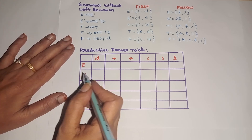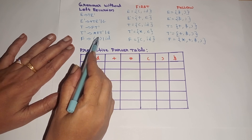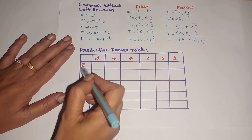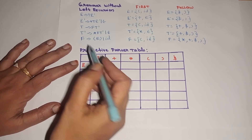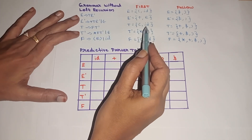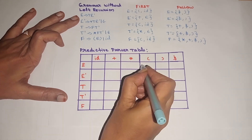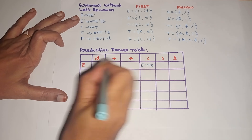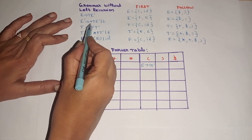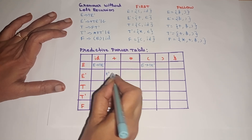Next, let us construct the predictive parser table. In this table, rows are variables and columns are terminals. Apart from the terminals in the grammar, we also include the dollar sign; epsilon is not included in the terminal list. For E tends to T E-dash, first of T is {open parenthesis, id}, so in row E, columns open parenthesis and id, we include the production E tends to T E-dash. For E-dash tends to plus T E-dash, first of plus is plus, so in row E-dash, column plus, we include E-dash tends to plus T E-dash.